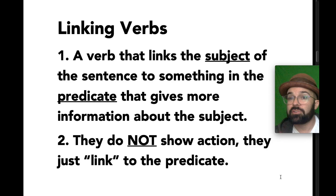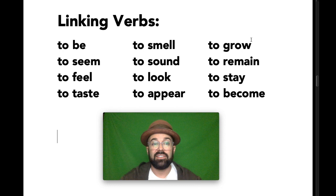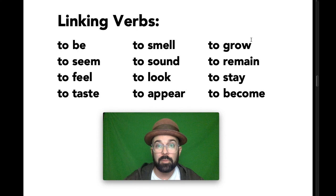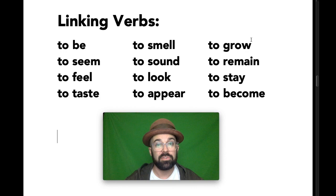Here's the list of linking verbs — write them down. There are only 12 of them, so it shouldn't be that difficult to memorize. To be is of course the main linking verb, and we'll be able to use it to test some of the others, because some of these words could be linking verbs but they could also be action verbs. The full list: to be, to seem, to feel, to taste, to smell, to sound, to look, to appear, to grow, to remain, to stay, and to become. Those are the linking verbs.